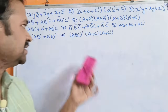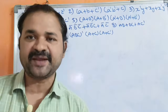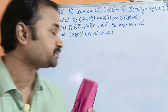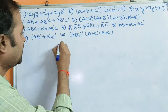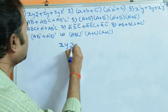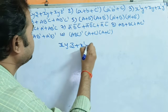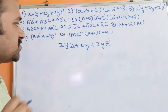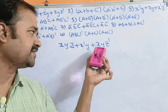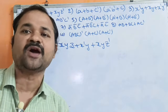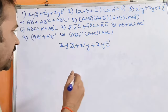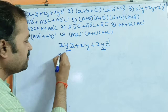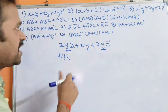Let us simplify these 10 boolean expressions with the help of boolean algebra rules. Let us see the first expression: xyz + x'y + xyz'. We have to simplify this boolean expression. If we observe the first two terms and the third term, xy variables are common. So let us factor out xy.